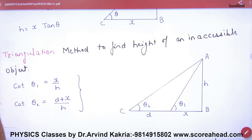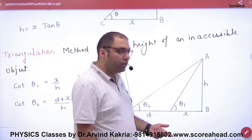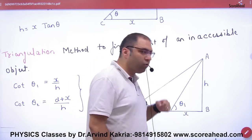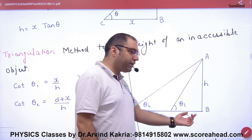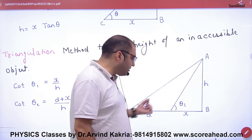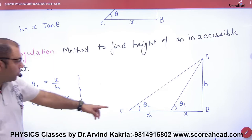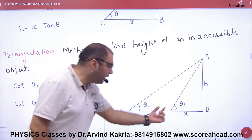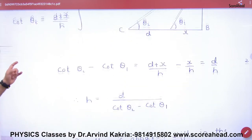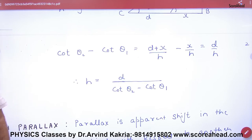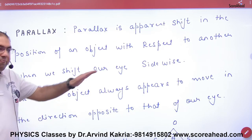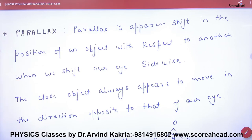This indirect approach is called the triangulation method — used to find the height of an object we cannot directly reach, such as when there is water in the way. You can measure the ground distance d, then take angle of elevation θ from two points, using cot θ₁ × (1/h) and solving simultaneously so that h can be calculated. This is also an indirect method. Now the most important topic coming up is the parallax method.